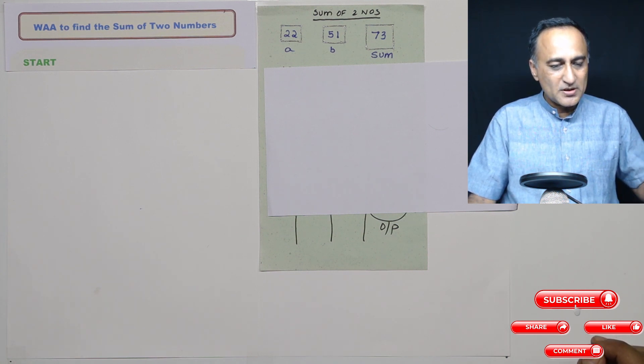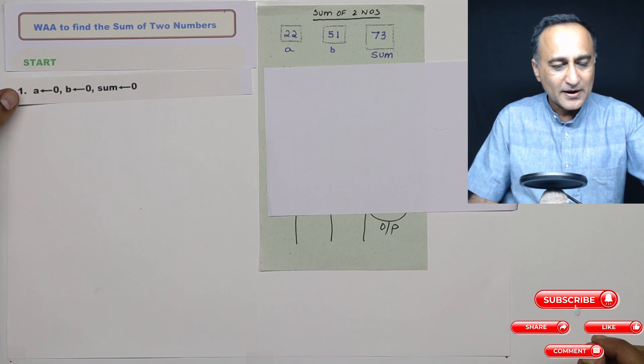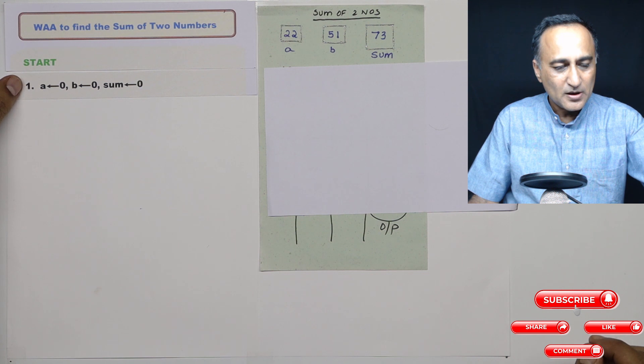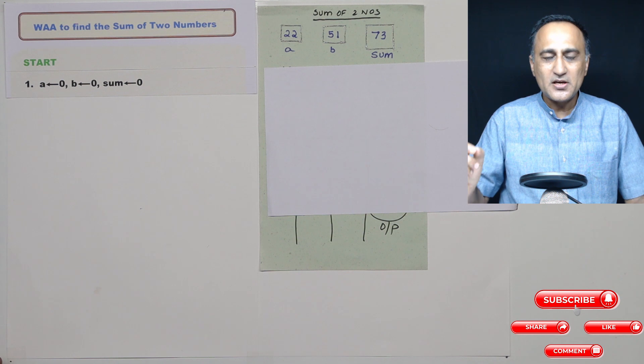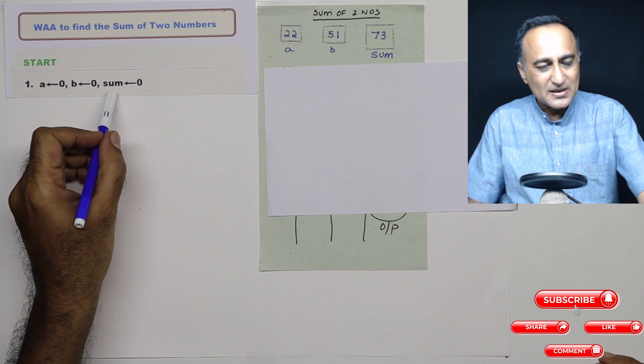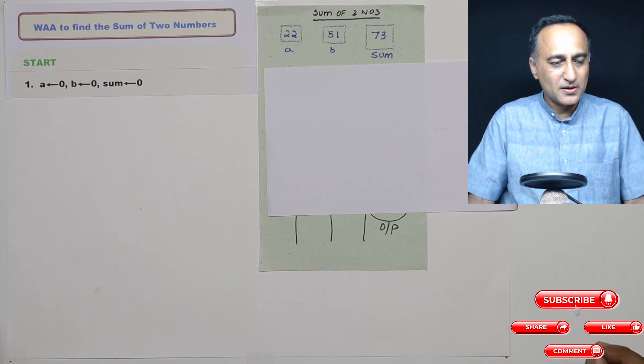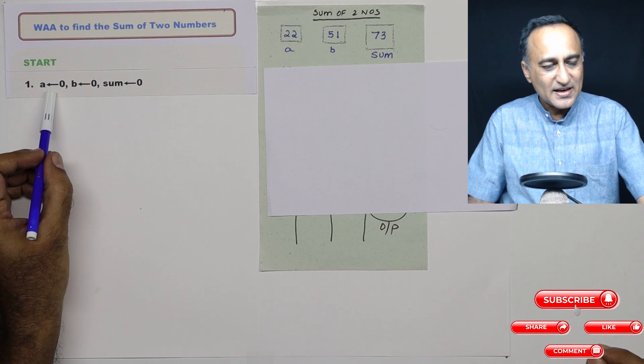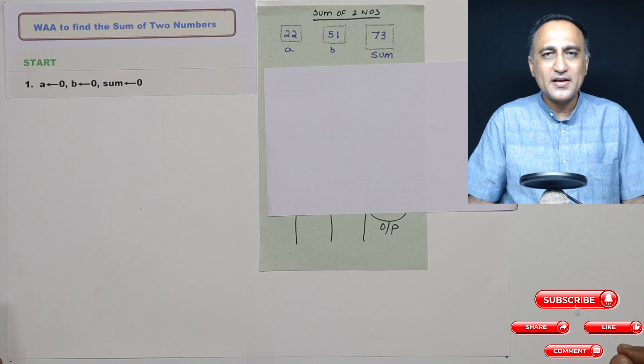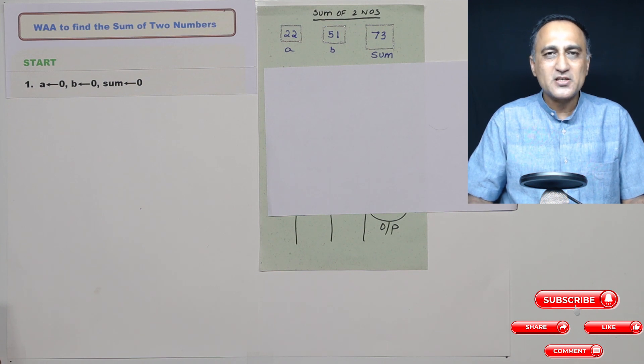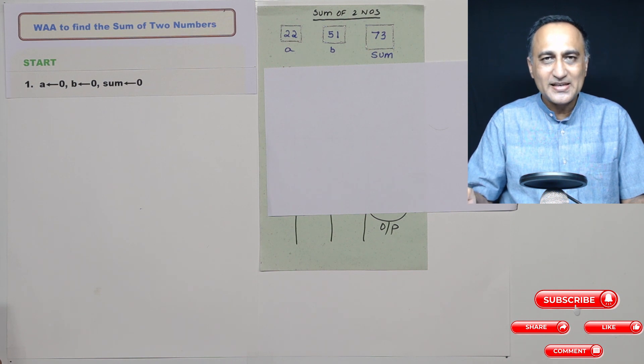So first thing what I need to do is, I am going to define three variables A, B and sum. What these three variables are going to do is, A is going to store the first number, B is going to store the second number, and sum is going to hold the result of A plus B. What I have done is I have assigned A with zero, B also as zero and sum as zero. Initially, it's a good idea to give all the memory locations a value of zero, so that if there is any error in calculations, you're able to easily identify it.